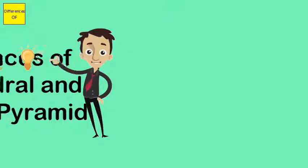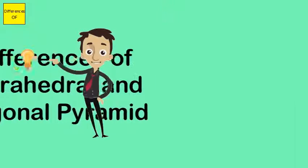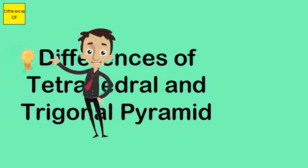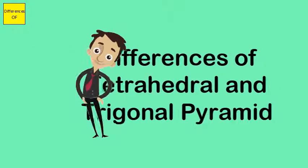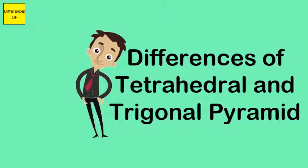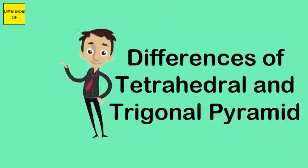Difference between tetrahedral and trigonal pyramid. Differences: Tetrahedral molecules have four equal sides.